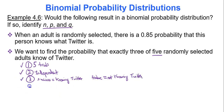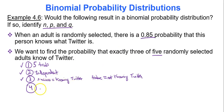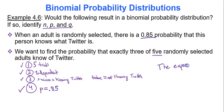Condition four: the probability of a success in one trial is P. Is there a probability of knowing what Twitter is? Yes — when an adult is randomly selected, there is a 0.85 chance. So the experiment is binomial.